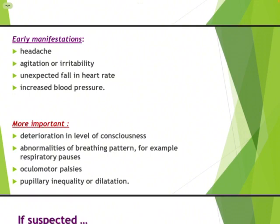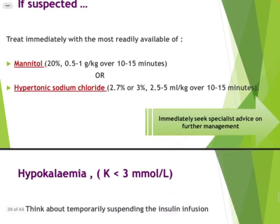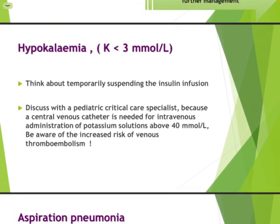If cerebral edema is suspected, treat promptly with mannitol and hypertonic saline. Hypokalemia — potassium less than 3 mmol/L — is another common complication. Consider stopping insulin infusion temporarily and repeating potassium levels. If potassium doesn't correct, IV potassium administration may be needed through a central line — not a peripheral line, as this increases risk of venous thromboembolism — and an intensivist should be consulted.